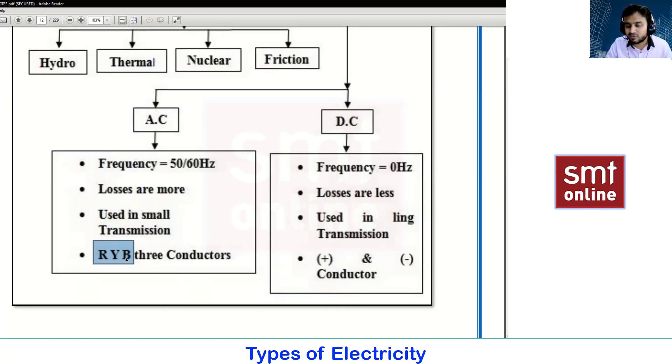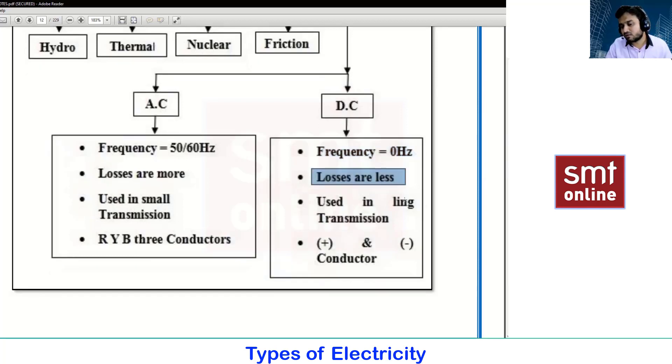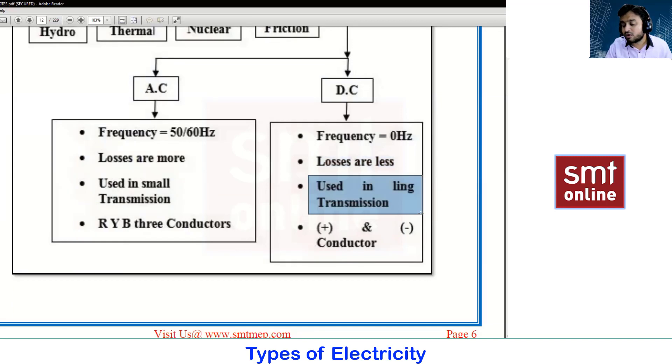When talking about DC or direct current, the frequency is zero. We have a fixed amount of magnitude - like when you talk about a battery having 12 volt, 48 volts, or 6 volts. Here we have a fixed magnitude value, so frequency is totally zero because we will never find any positive or negative cycle. Based on that, the losses are less - minimum to zero. This is used in long transmission, more than 300 kilometers.